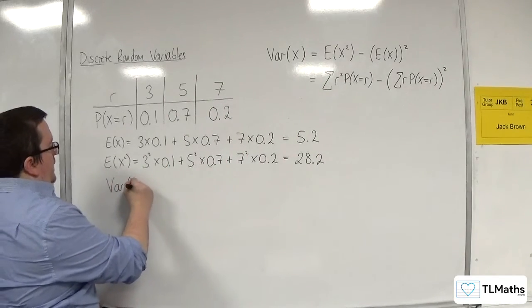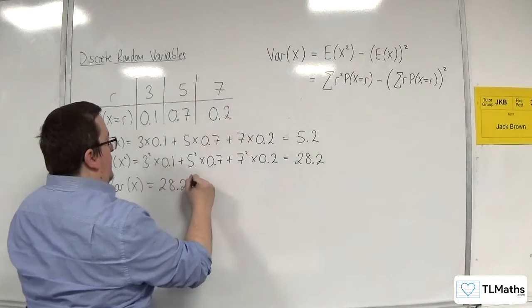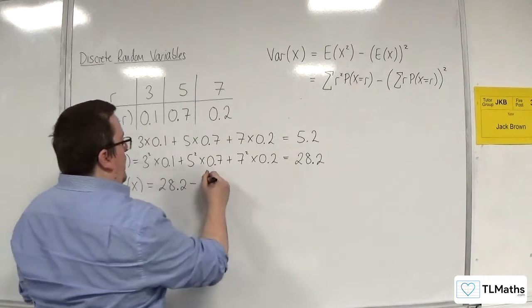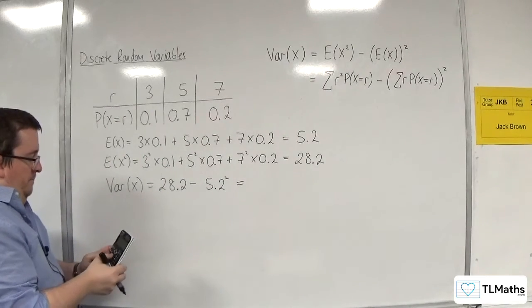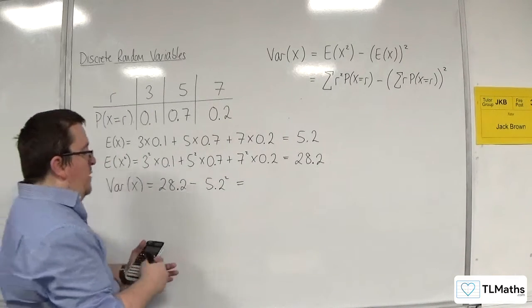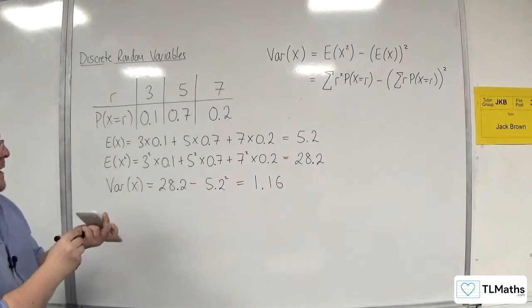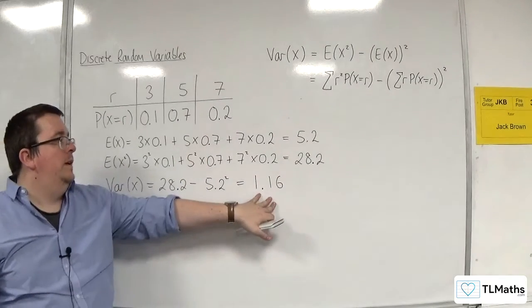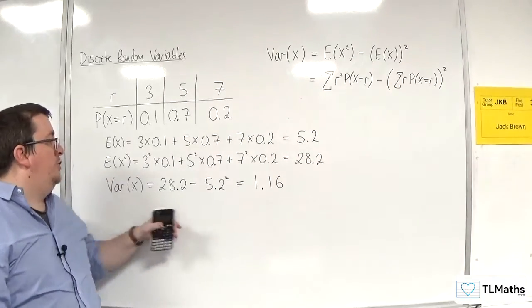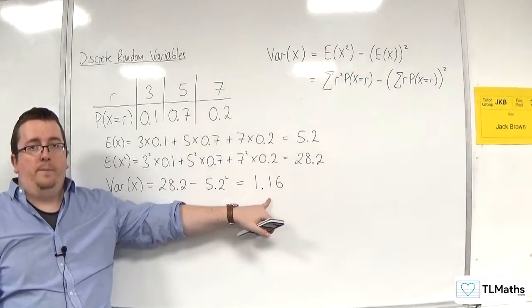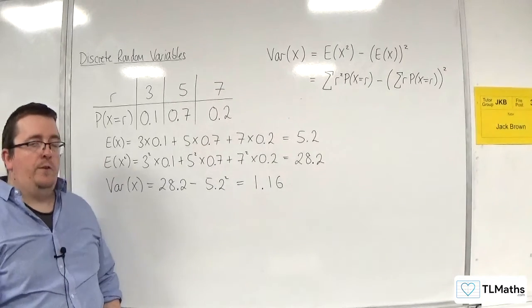Then, Var(X) is equal to the E(X) squared, so 28.2, take away E(X) all squared, so take away the 5.2 squared. And that gets me 1.16. And so, that is Var(X). And that's how we can calculate it. Now, if the question asks us to find standard deviation, then I just need to square root that. OK, so that is Var(X) and how it is calculated.